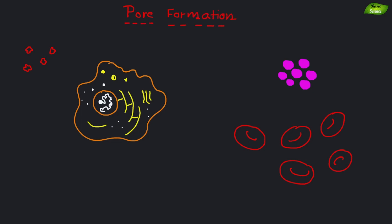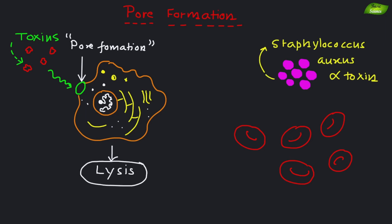The second mechanism is pore formation. Certain toxins form pores in the host cell membranes, leading to cell lysis. Staphylococcus aureus alpha toxin is an example that creates pores in the membranes of red blood cells and other cell types.